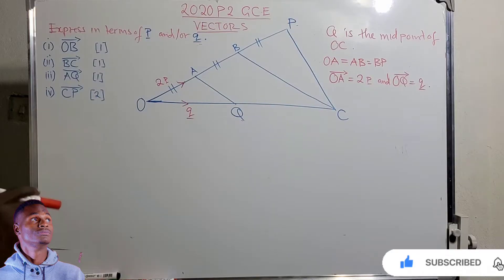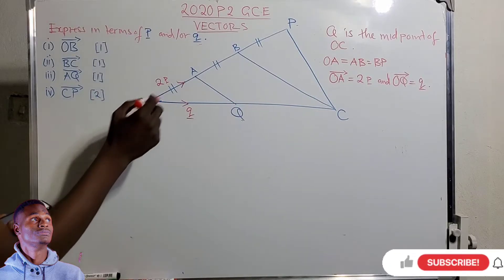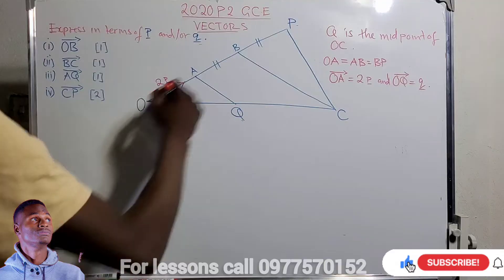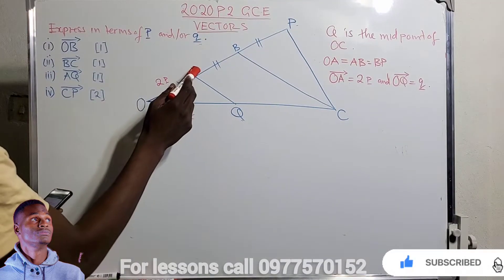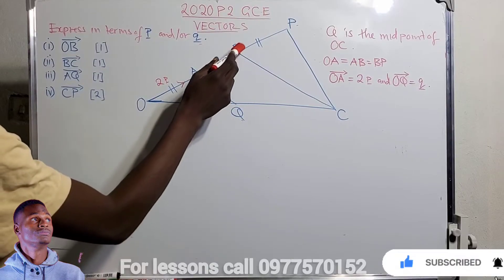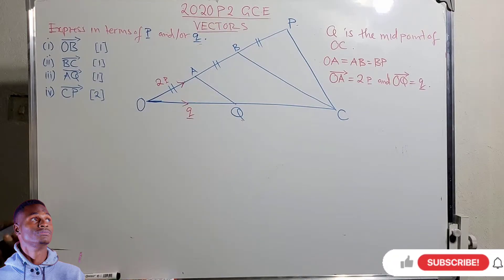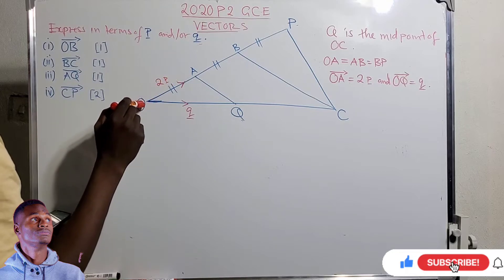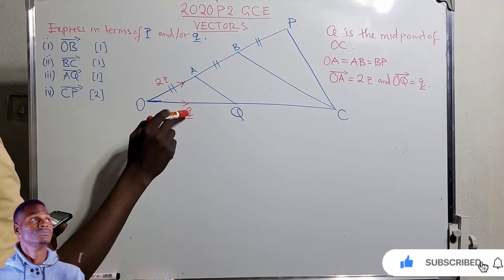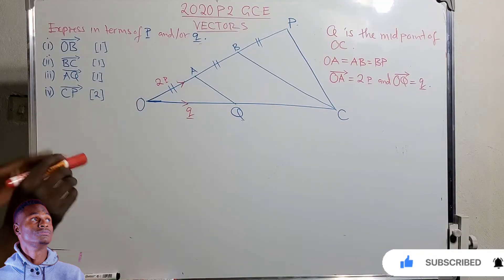In the diagram, Q is the midpoint of OC, and OABP is a straight line. We see OA equals AB equals BP, and vector OA is two vector p, and OQ is vector q.